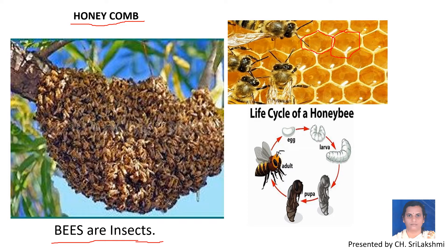How is the honeycomb made? It is made from the wax produced by the bees. This wax is chewed until it becomes soft, and it is mixed with nectar and pollen to make the honeycomb.